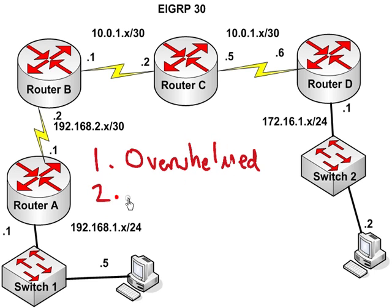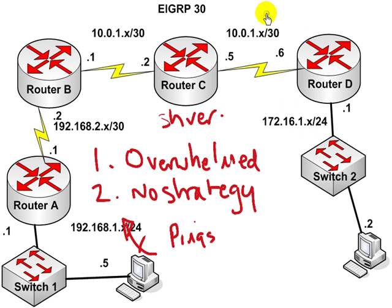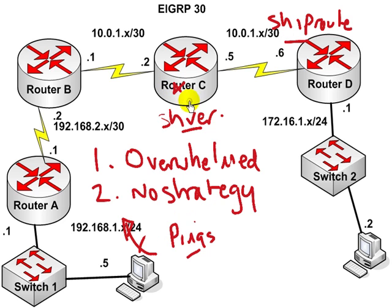Number two, and this is the biggest one: strategy. What people will start doing is, say, this PC can't get out to the internet — they'll start randomly doing pings, then go over here and do a show version, then go over here and do a show IP route. Really, they're just wasting a lot of time. If you can't ping from here to here, why are you issuing that command? If it isn't part of your strategy, then the information — you can't actually use it to build up a picture of what's going on.